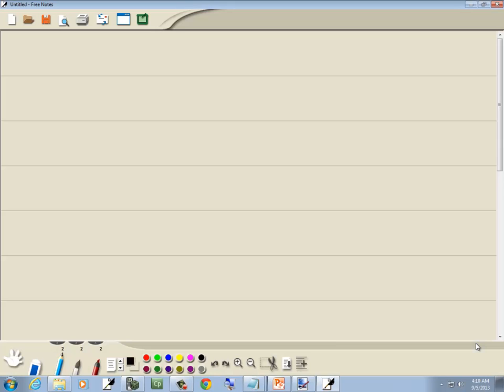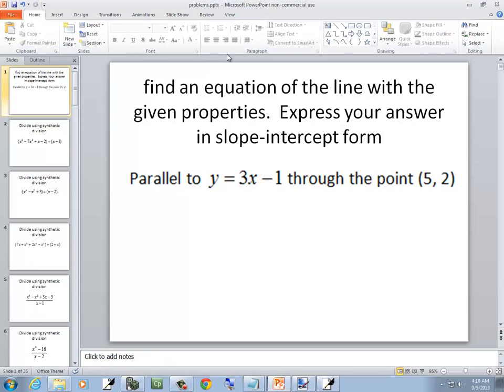So they're telling us that it's parallel to y equals 3x minus 1, and passes through the point (5, 2).